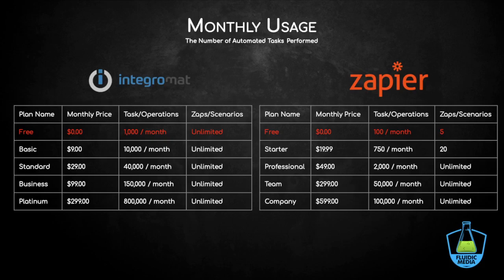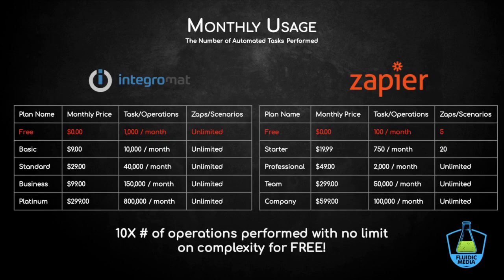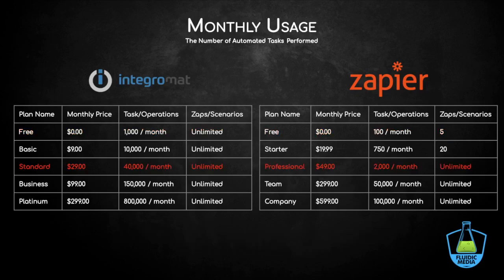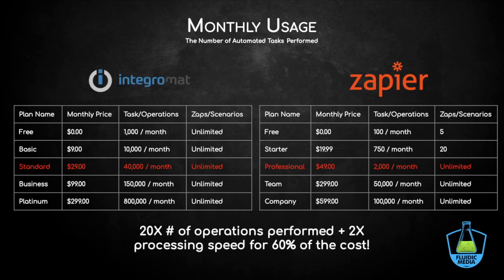Integromat also doesn't count filters as an actual step or operation, whereas in Zapier that's an entire module that eats up your task limit. So you get 10 times the number of operations performed with no limit on complexity for free. At the professional plan level, you get 20 times the number of operations. And remember, you also get twice the processing speed for 60% of the cost — that's a lot more automation to streamline your business, processing things much faster for significantly less money.